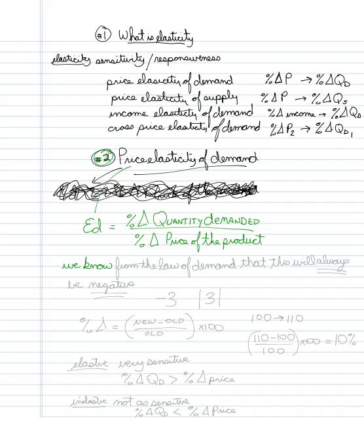Now, we know from the law of demand that this will always be negative. Always, always, always. It will always be negative because price and quantity demanded move in the opposing direction.